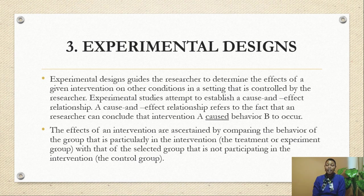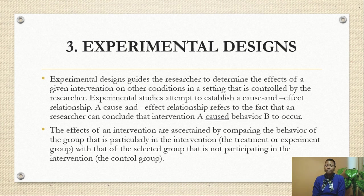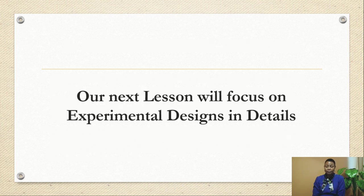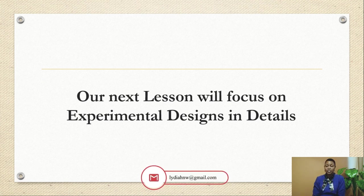Design number three is experimental design, which determines cause and effect — causality tells us that variable A caused variable B to occur. Our next lesson will focus on experimental designs in detail.